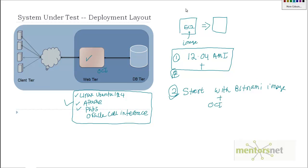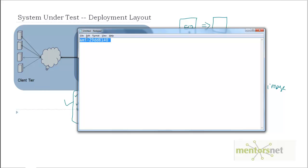For option number three, I am going to give you an AMI that already has Linux 12.4, Apache, PHP5, and Oracle Call Interface. So out of these three options: you can go with the vanilla Linux and configure everything yourself, or start with a Bitnami image and add OCI, or use my AMI. I'll put notes so you can find my AMI. Let's see if this AMI is available.